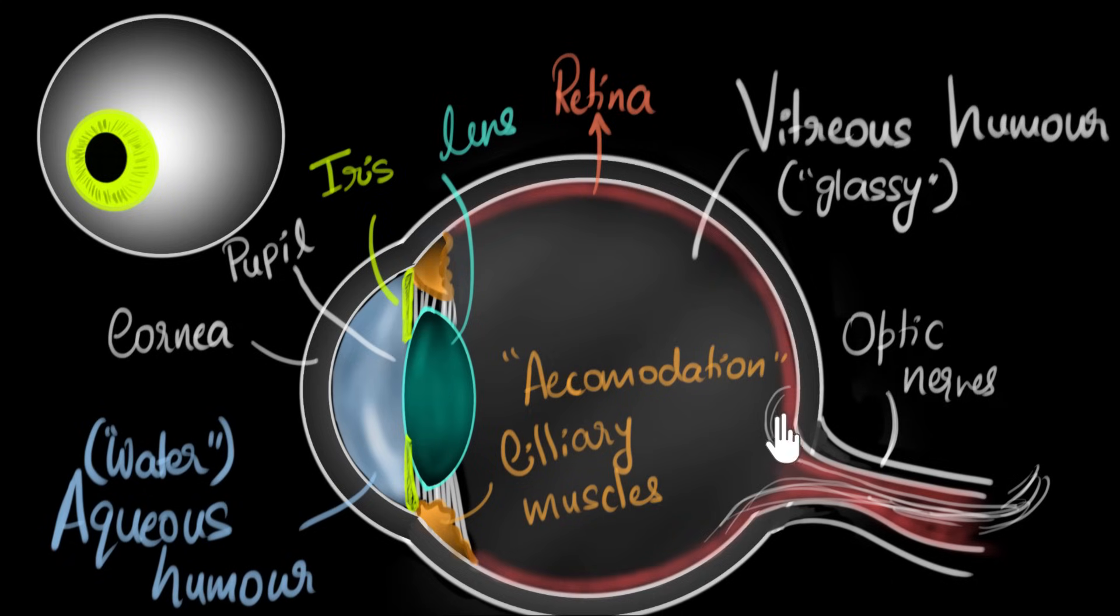The retina contains light-sensitive cells, whose job is to convert light into electricity. These electrical signals are carried out by optic nerves. Their job is to carry the signal all the way to the brain so that the brain can process the information.